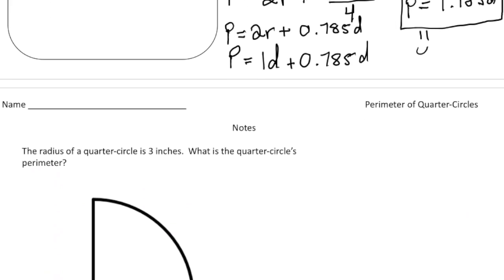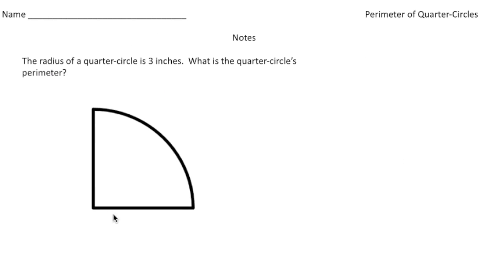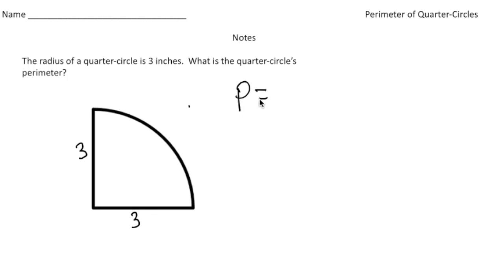The radius of a quarter circle is three inches. What is the quarter circle's perimeter? So we know both radii are three, meaning three plus three is six — a good part of the perimeter. But I'm going to use the formula to get the full perimeter. Perimeter equals 1.785d.